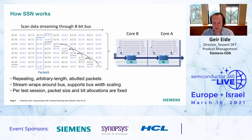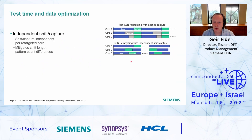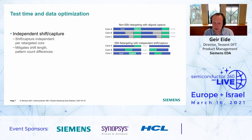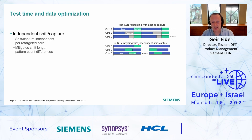This rotation and the way data is packetized keeps the data on the bus compact. Another advantage is what we call independent shift and capture. In most traditional methods, when you test multiple cores in parallel, you have to align capture cycles — meaning if scan chains have different lengths, there's padding and waste per scan pattern load. With SSN, since we generate the signals locally, we don't have that waste and can pack the data more efficiently. There are pattern types like X-test and IDDQ where you do want aligned capture, and you can do that with SSN too — but for the majority of patterns you leverage independent shift and capture.